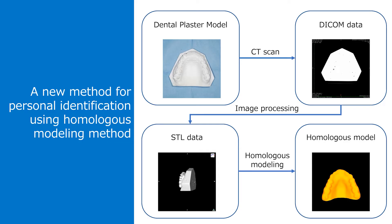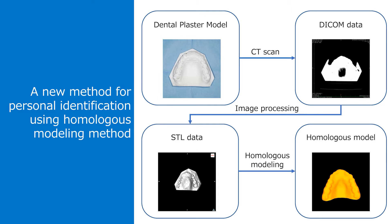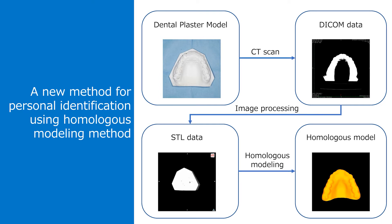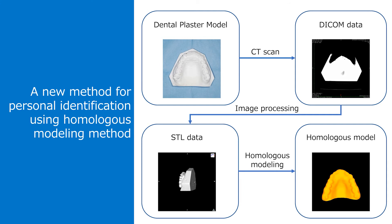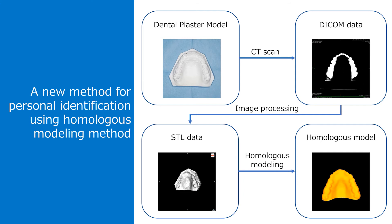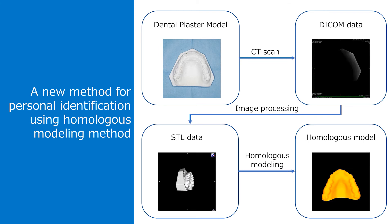In the field of forensic odontology, we are developing a new method for personal identification. In our research, we CT scanned dental plaster models and created STL data. By using a method called homologous modeling, we found out that the morphology of the palate is effective in personal identification.